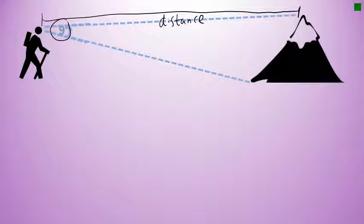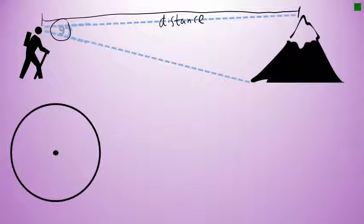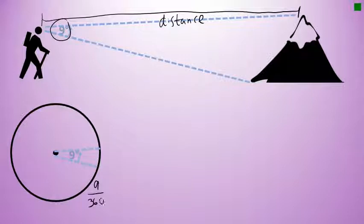This diagram of a hiker and a mountain can be represented as a sector of a circle. A sector of a circle is a fraction of a circle defined by what is known as a central angle. In this situation, the central angle would be 9 degrees, and this sector represents the fraction of the entire circle: 9 over 360. The entire way around the circle would be 360 degrees, but in our sector, the central angle is only 9 degrees, so this sector is 9 over 360 of the entire circle.